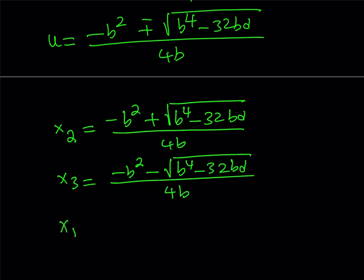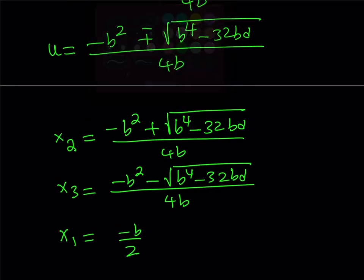And remember, we had found x1 earlier, and it was negative b over 2. And this pretty much gives us all the solutions.